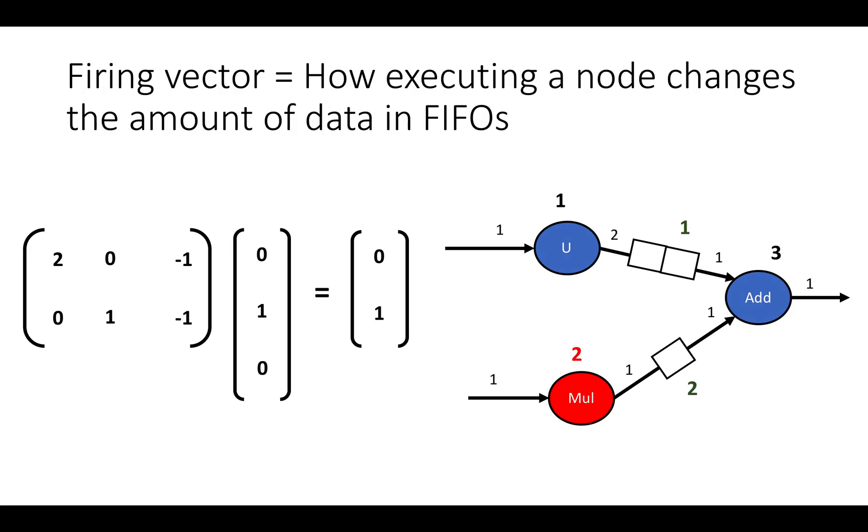In the last video we set up the idea of a synchronous data flow graph and showed an example firing sequence, and then showed this kind of odd data structure, the topology matrix, that can be used to represent how the firings of different nodes in the synchronous data flow graph affect the amount of data in buffers in the graph.